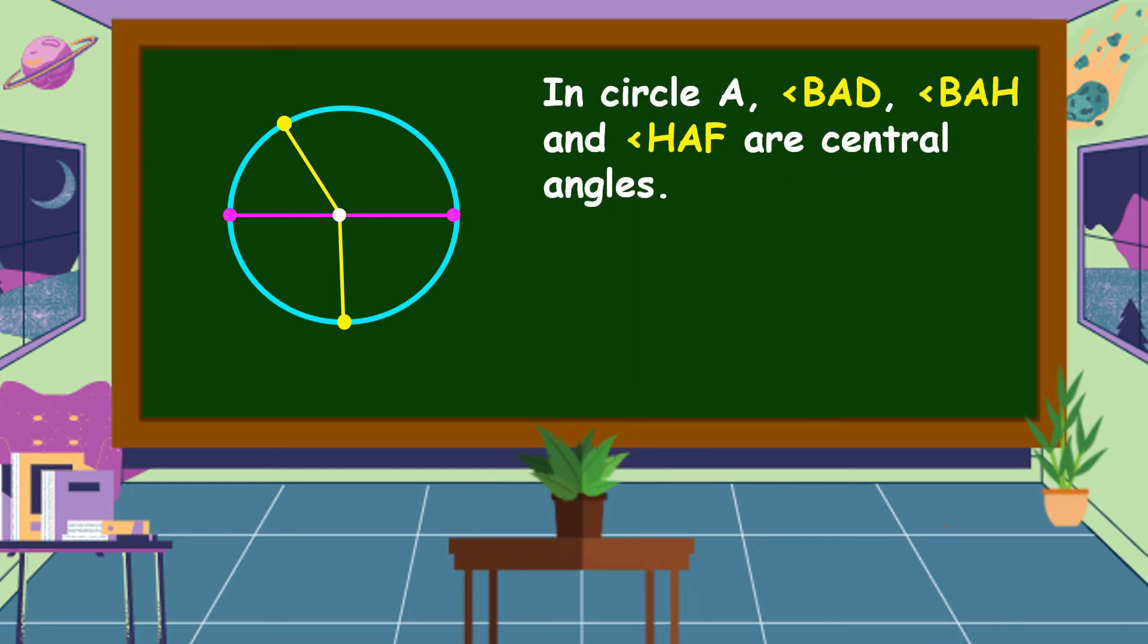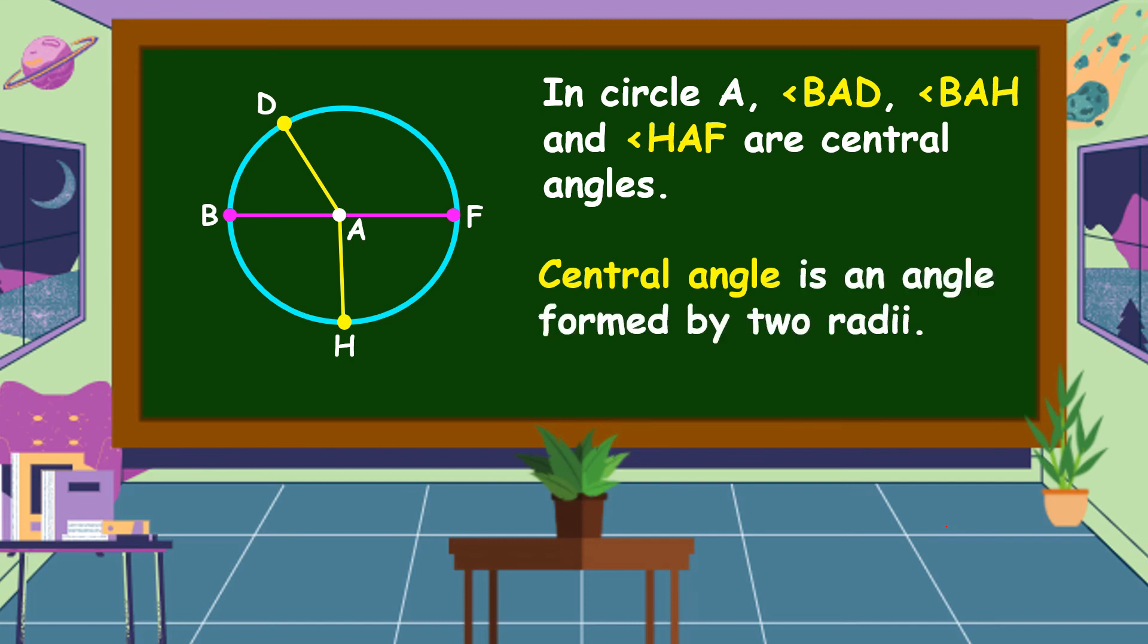In circle A, angle BAD, angle BAH and angle HAF are central angles. What is a central angle? A central angle is an angle formed by two radii.